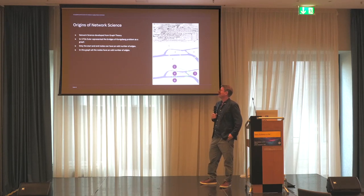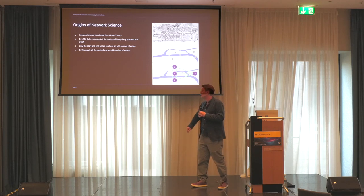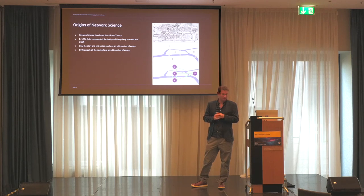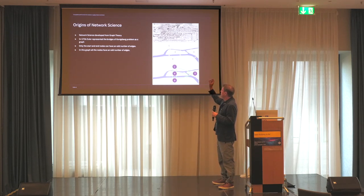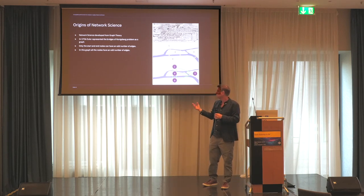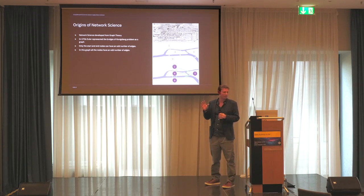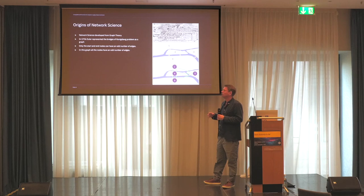To give you an understanding of where network science comes from: the earliest example comes from graph theory. In 1736, Euler tried to solve the bridges of Königsberg problem — essentially, how do you cross every bridge but only once? He thought of the bridges as edges and the land masses that the river divides as nodes, and represented it as a network. That led to the intuition that you can only have two nodes with an odd number of edges, otherwise you'd always be crossing the same bridge twice or leaving one uncrossed. It's a way of solving what was a very difficult problem by thinking of it as a graph.